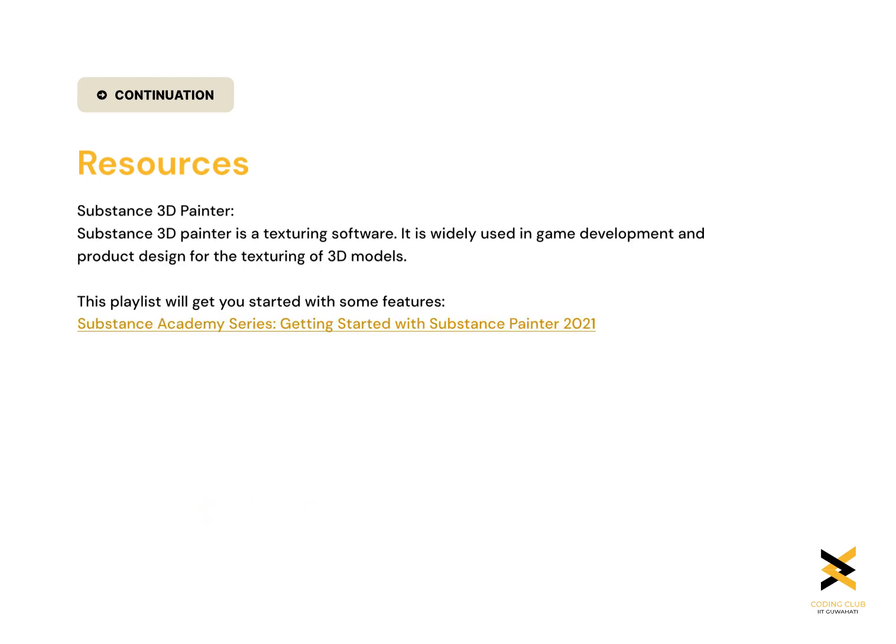Substance Painter is a very popular texturing software, widely used in game development and product design for the texturing of 3D models. Suppose you create the Taj Mahal in Blender or Maya — you can texture it inside those softwares, but Substance Painter makes it very easy to texture and UV unwrap models with its advanced masking and lighting techniques. It is very easy to export models to Substance Painter and get the textures and the look of the model you need. The playlist listed below will get you started with some features of Substance Painter.